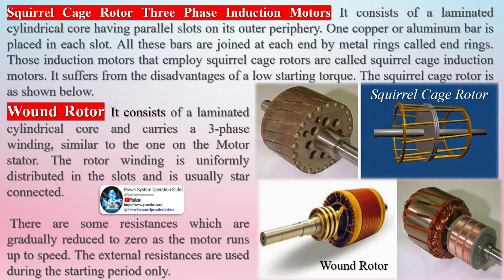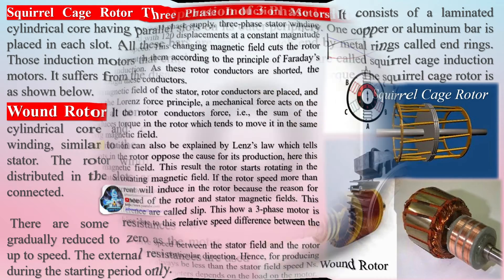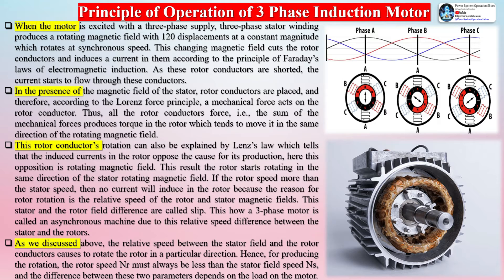The wound rotor consists of a laminated cylindrical core and carries a three-phase winding similar to the one on the motor stator. The rotor winding is uniformly distributed in the slots and is usually star connected. Some resistances are gradually reduced to zero as the motor runs up to speed, and the external resistances are used during the starting period only.